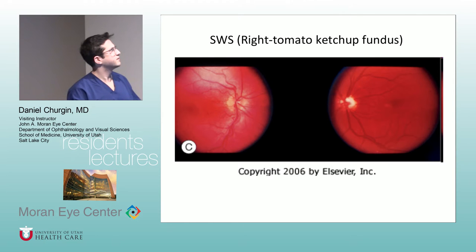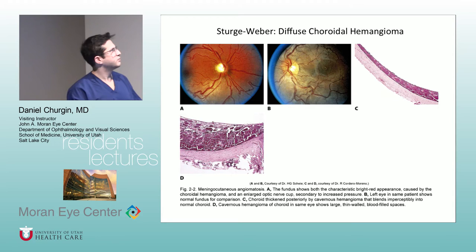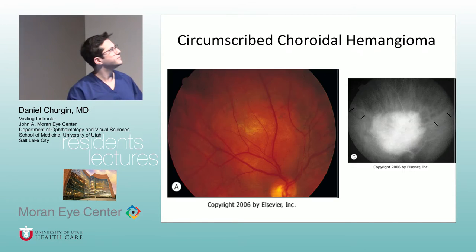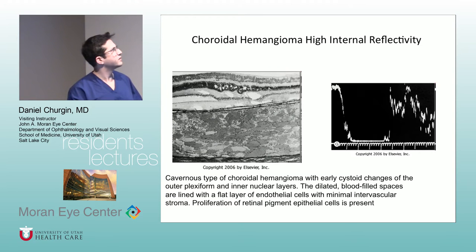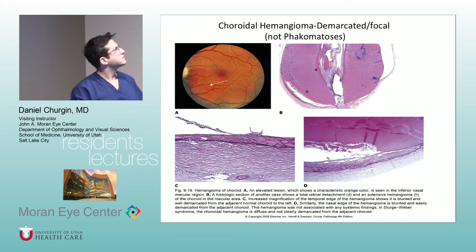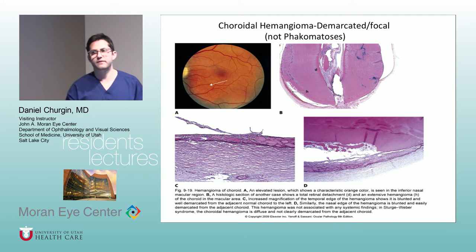Here's an example of the tomato ketchup fundus and diffuse choroidal hemangioma. Here's a pathology picture. If they have a circumscribed choroidal hemangioma, it is NOT associated with Sturge-Weber — but the diffuse pattern is. The more circumscribed one looks more focal, with a reddish-orange appearance. High internal reflectivity is characteristic on B-scan. They can be sort of hard to see on pictures, but you can see the outline of it.